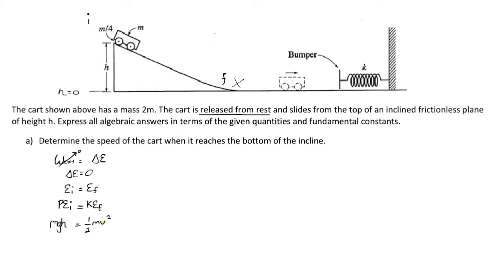The masses are not going to determine the speed here. We can cross multiply over the 2, and have that 2gh is equal to v squared, and finally take the square root of both sides.